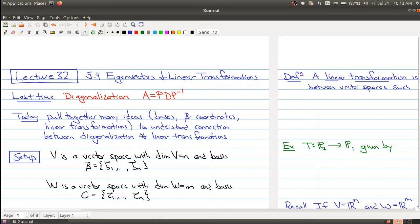So this is the setup that we're going to be looking at. We have a vector space V here, let me point it out. We have a vector space V with dimension n and some basis, and W is a vector space of dimension m with some basis c1.